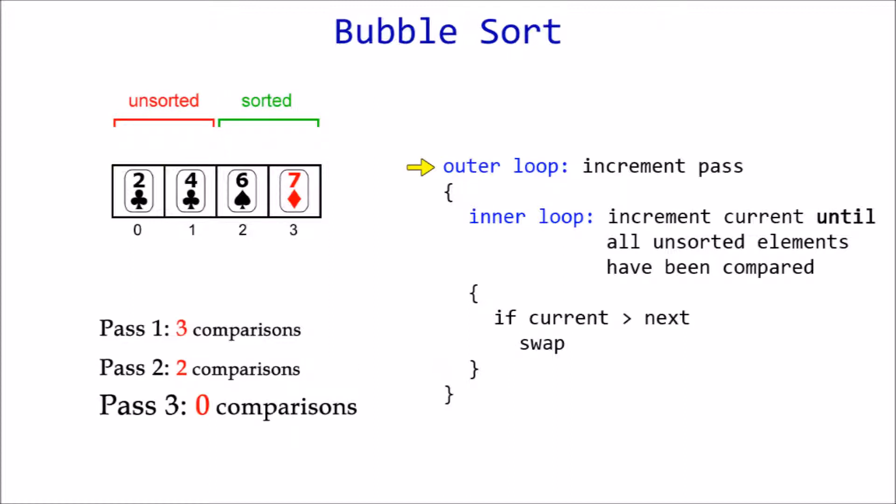Time for our third and final pass. Two is not greater than four, so there's no need to swap. Four becomes part of the sorted section, leaving the two of clubs as our lone remaining element. However, the last remaining element will always be in its correct position, so our job is finished.